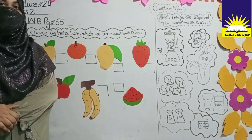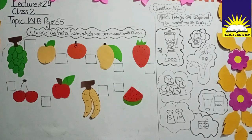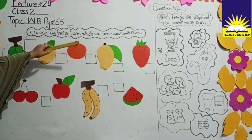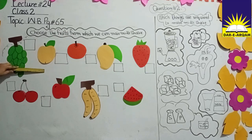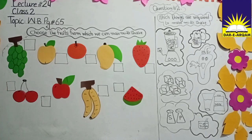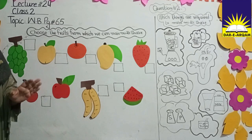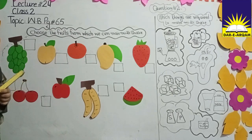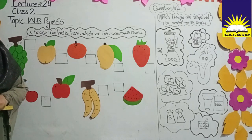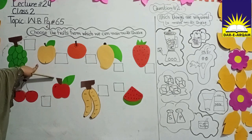You have to choose the fruits from which you can make a milkshake — we will cross the others. Take your pencils. Remember, the fruits on the assessment sheets are without colors. You want to color every fruit, and take those fruits from which we can make milkshakes.